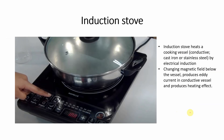دوسری application ہے induction stove — اسے ہم کہتے ہیں 'ٹھنڈا چولہ'۔ یہ ایک ایسا stove ہے جس کو آپ ہاتھ لگائیں تو ٹھنڈا ہوگا، لیکن جیسے ہی آپ اس کے اوپر special pot رکھیں گے تو یہ heat ہونا شروع ہو جائے گا۔ Induction stove heats the cooking vessel — جو کہ conductor ہونا چاہیے، cast iron کا یا stainless steel کا — by electrical induction۔ Induction stove کے اندر ایک conductive container ہے اور اس کے نیچے base کے اندر coils لگے ہوتے ہیں۔